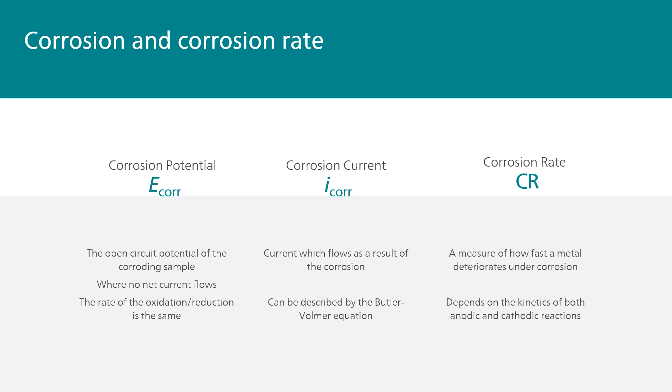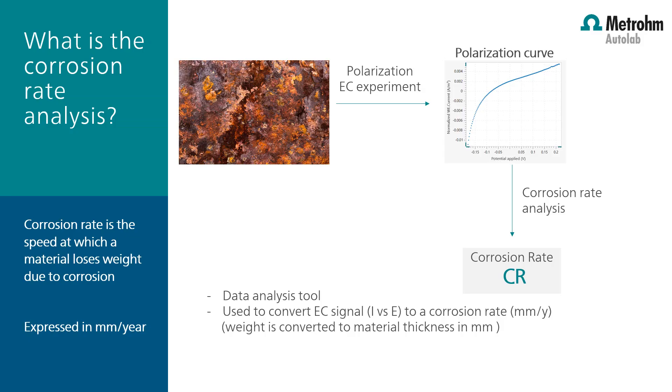The corrosion current can be described by the Butler-Volmer equation, and the corrosion rate can be determined with the anodic and cathodic reactions. To measure the corrosion rate in the electrochemical way is by polarizing the sample and measure the resulting current. It is basically putting the sample outside of its equilibrium in the electrochemical cell.